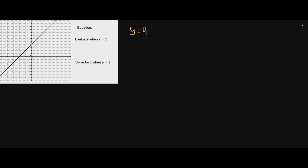So what's our equation? Remember the y-intercept is always my starting value, so four. Now are you increasing or decreasing? When you make your next dot on the grid you'll notice you had to go up — that means it's positive, we're increasing. We're going up two over one, so that's a slope of two. The equation is y equals four plus two times x.